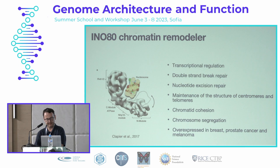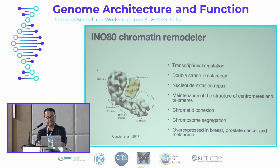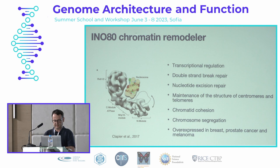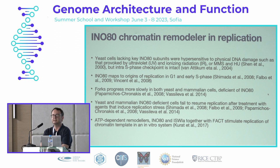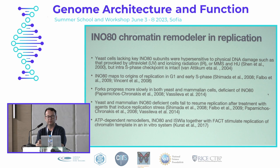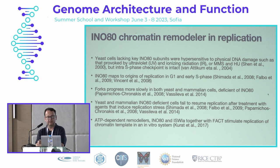The INO80 chromatin remodeler is a multi-subunit ATP-dependent complex that is involved in basically everything in the nucleus — repair, transcriptional regulation, genome segregation, and many other things. But what we are really interested in is its role in replication. It has been known since the beginning of the century that yeast lacking subunits of the remodeler are hypersensitive to DNA damage that induces lesions that stall replication forks. INO80 also maps to origins of replication, and forks in both yeast and mammalian cells tend to progress more slowly when INO80 is missing. Also, following replication stress, forks fail to resume when INO80 is absent.